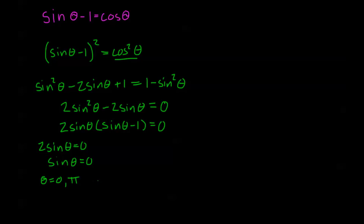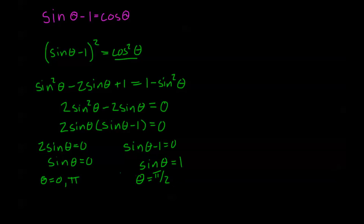These are the two places between 0 and 2π where sine theta equals 0 — not including 2π since it just repeats 0. For the other factor, sine theta minus 1 equals 0 means sine theta equals 1, which only occurs at theta equals π/2. But before writing the general solution, whenever we square both sides of an equation, we must check for what are called extraneous solutions.